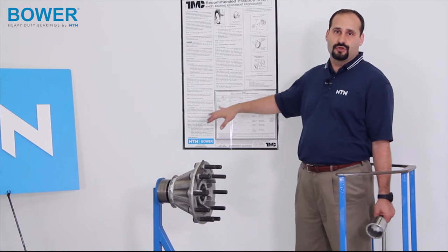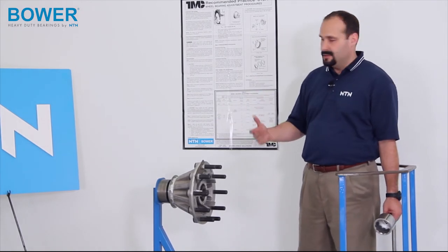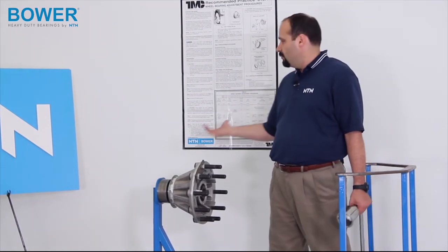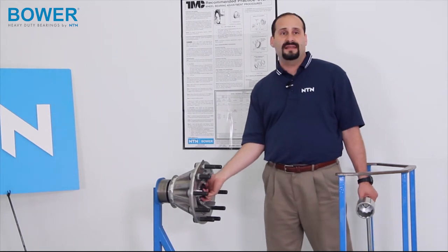But, the TMC procedure assumes a new wheel hub, a new spindle, new nut. So, one full turn should get it to where it's spinning freely. So, what we'll now have to do, take a general wrench, and back off one full turn.